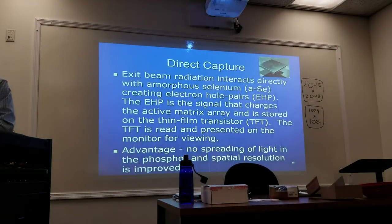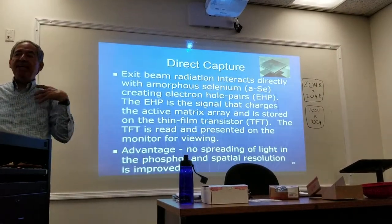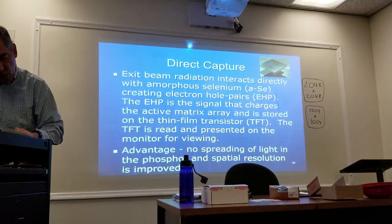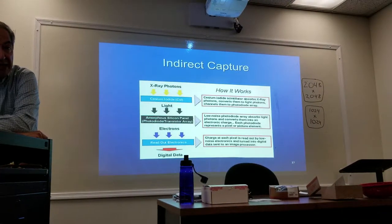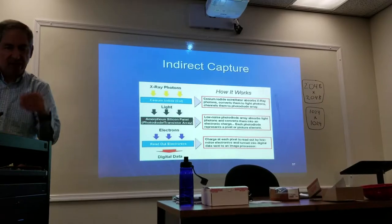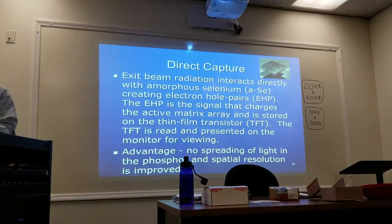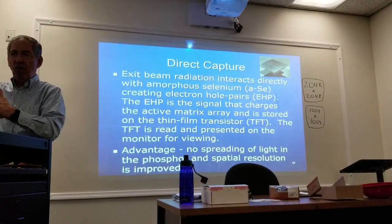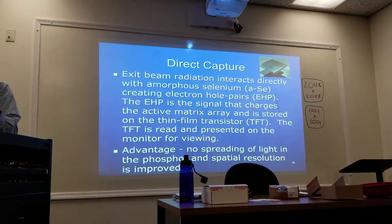With indirect capture, a lower dose occurs compared to direct capture. That signal is stored and then presented on the monitor. For direct capture, the exit beam going through the patient interacts directly with amorphous selenium, which creates electron-hole pairs — that is basically the signal — and then that is stored in the thin film transistors. The advantage is there's no spreading of light.